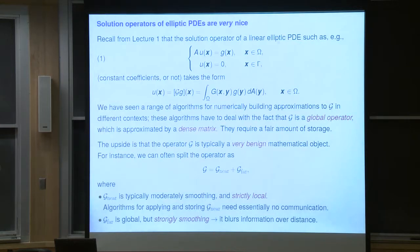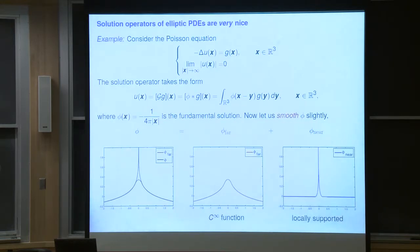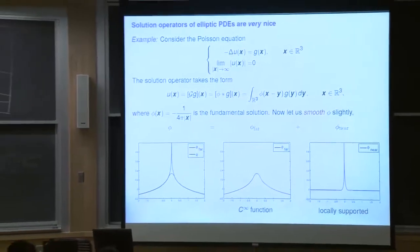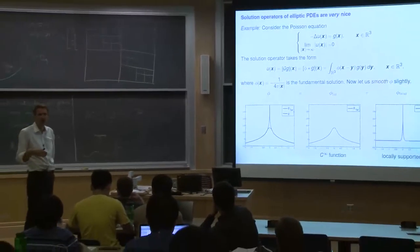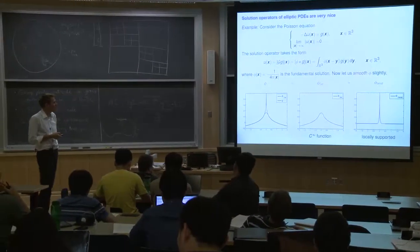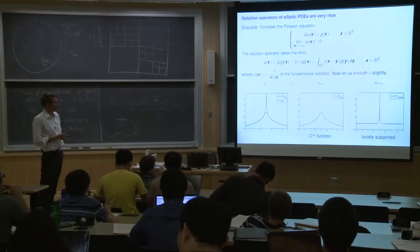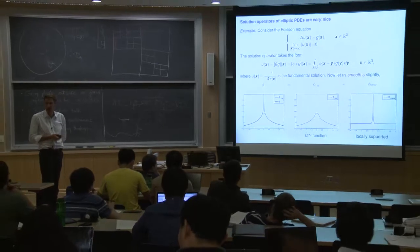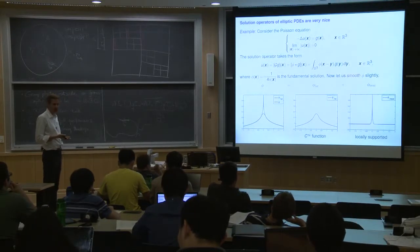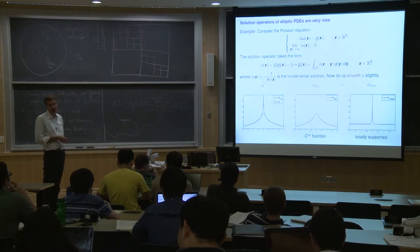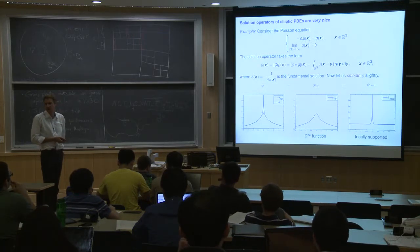For the free space solution operator, we showed how we could split it into a near field and a far field. The exact solution operator is convolution with the kernel, the log singularity. If you locally smooth out that singularity, you end up with one part — the global interaction — which is an extremely smooth operator. All long-distance interactions are very, very smooth, and this you should exploit in designing algorithms. Because these operators are global, this is the main drawback: you get dense matrices when you discretize.